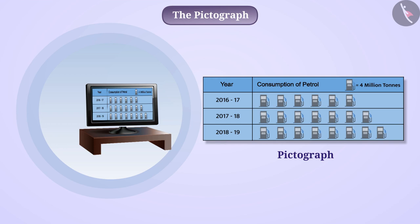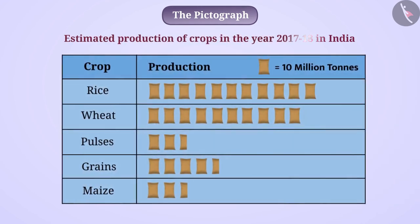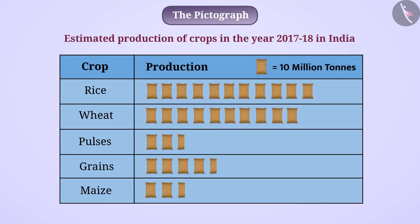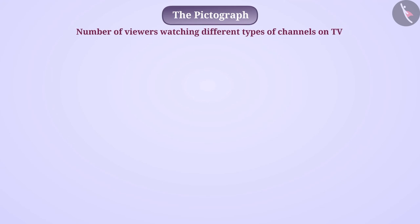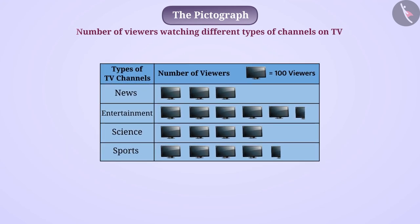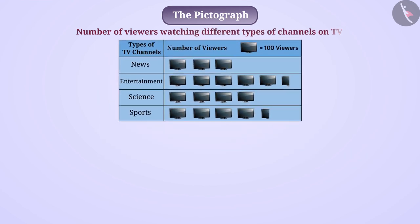For example, this graph shows the consumption of petrol in India in three different years. Similarly, the estimated production of crop in the year 2017–2018 in India is obtained from this pictograph. The pictograph shown here also shows the number of viewers watching different types of channels on TV in a village.